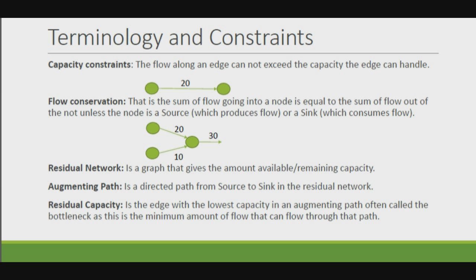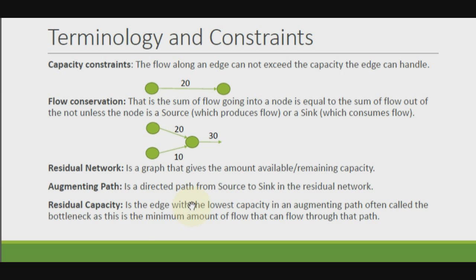Here are some of the terminologies I will be using. Capacity constraint: the flow along an edge cannot exceed the capacity an edge can handle, so a flow bigger than 20 is not possible for this edge. Flow conservation: the sum of flow going into a node is equal to the sum of flow going out of a node — so if flows of 20 and 10 are going into a node, then 30 must come out. Residual network is a graph that gives the remaining capacities. Augmenting path is a direct path from the source to sink in a residual network. Residual capacity is the edge with the lowest capacity in an augmenting path, often called the bottleneck.